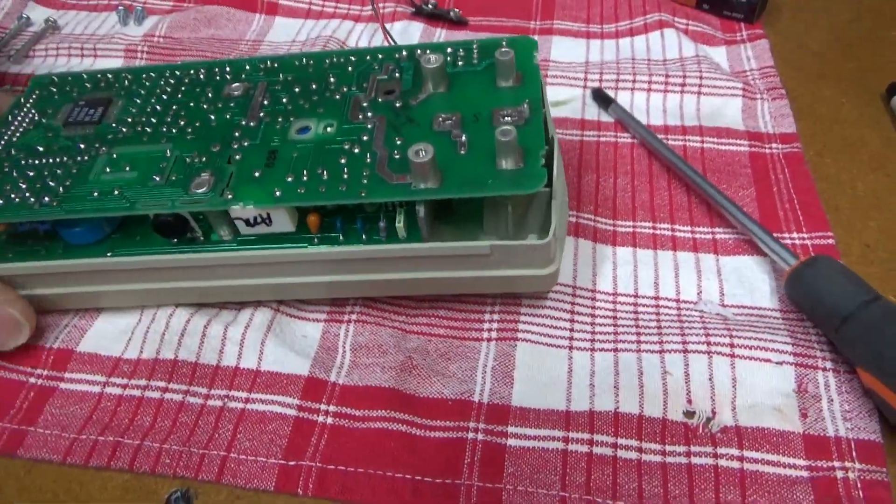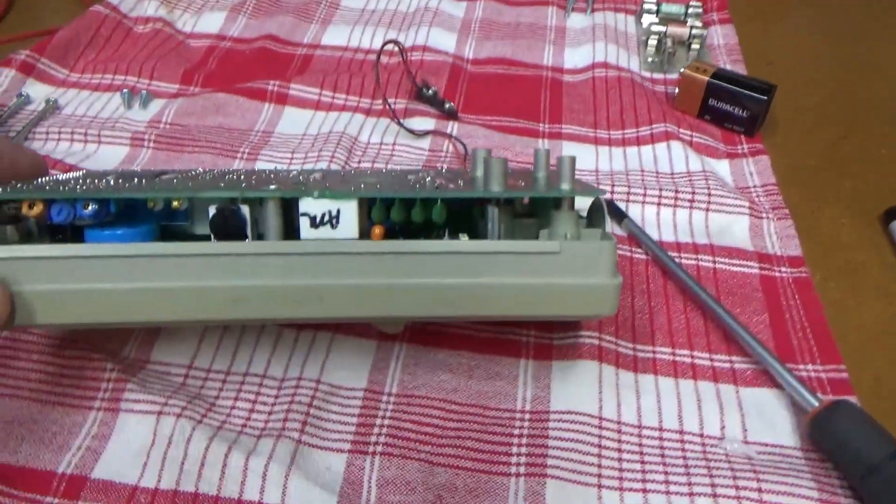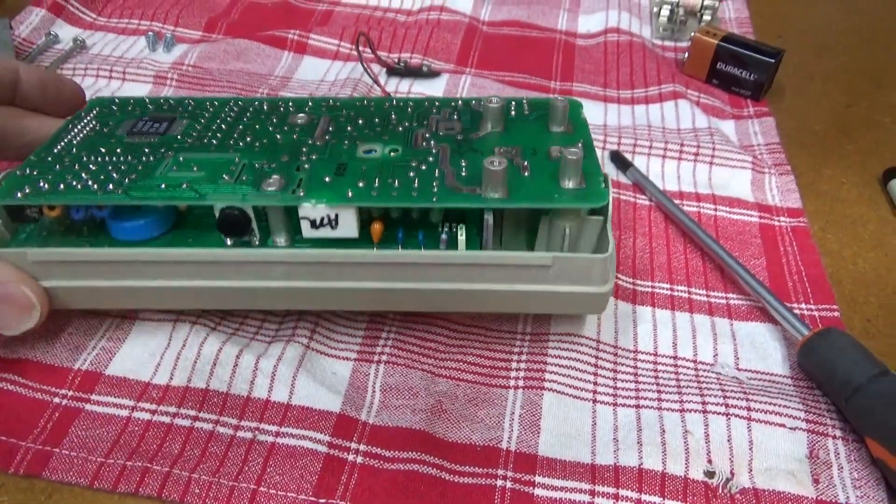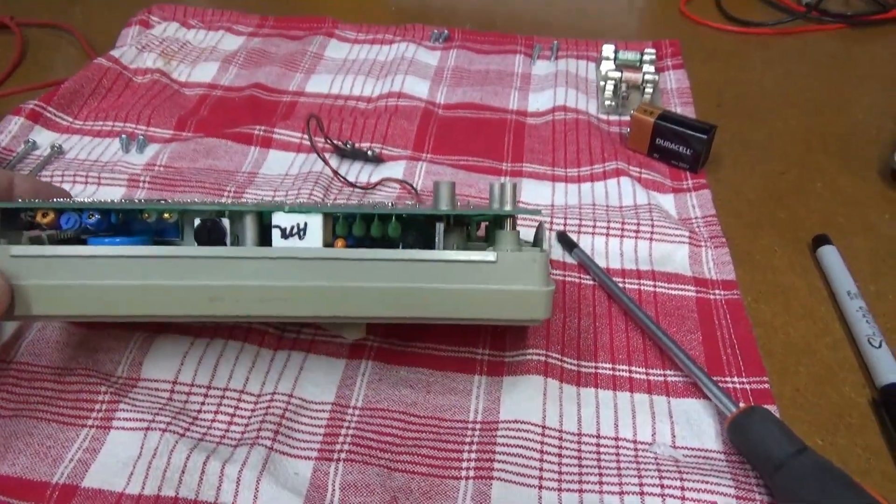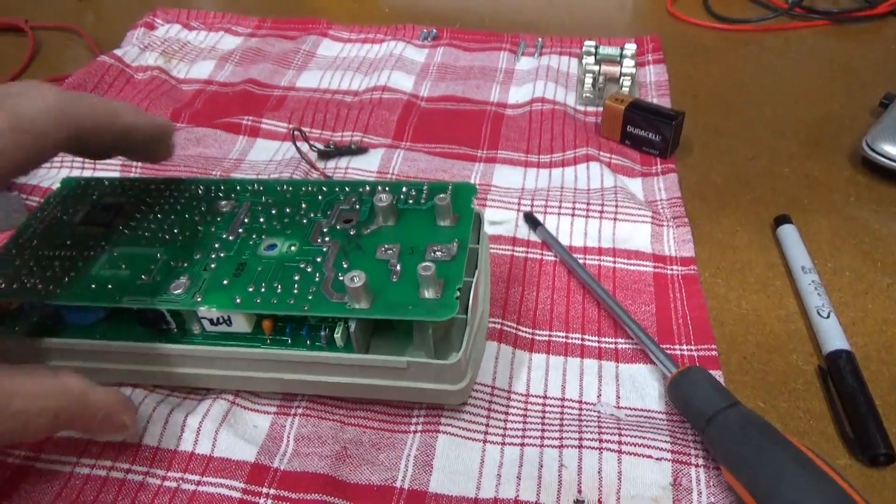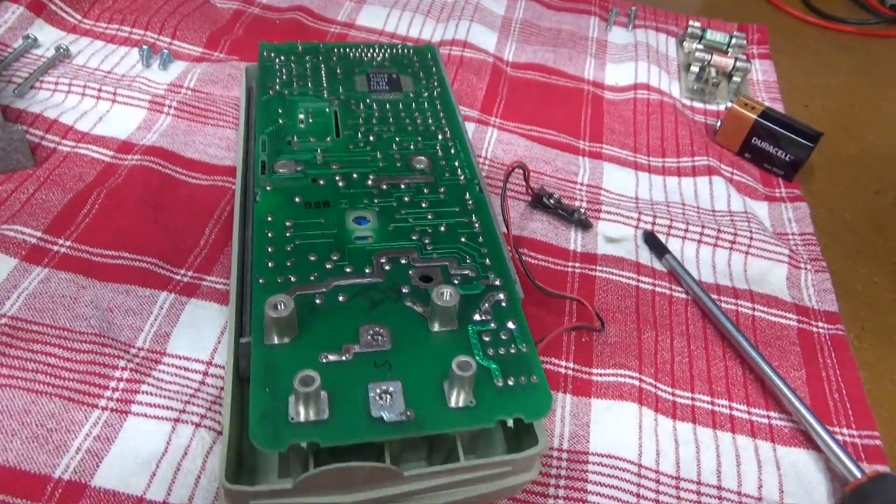Now this is really just like the Fluke 27 or the 25. Very similar layout, it's a little different on the display board. But I don't really want to pull it apart anymore, no need. I got the information that I wanted, but that's what they look like on the inside.